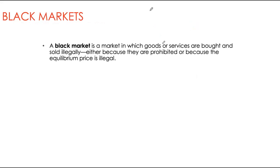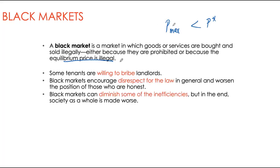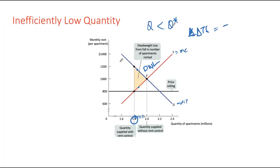Price ceilings may also lead to black markets — where goods or services are bought or sold illegally, either because the good is prohibited or because the equilibrium price is illegal. In a rent-controlled building charging $800 when market rent elsewhere is $2,000, there's a huge shortage. We see people trying to bribe landlords to get units, creating inefficiencies not otherwise present. While a black market allows trade to happen, it causes many other inefficiencies that are bad for the economy.